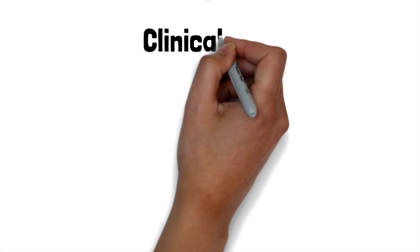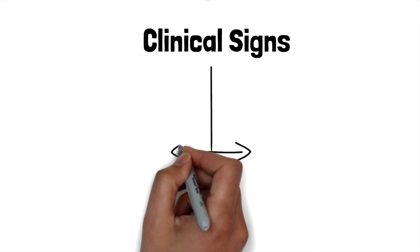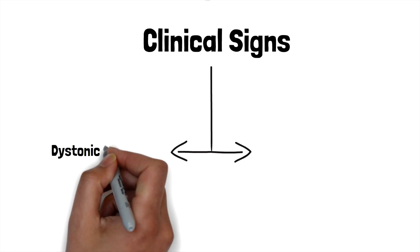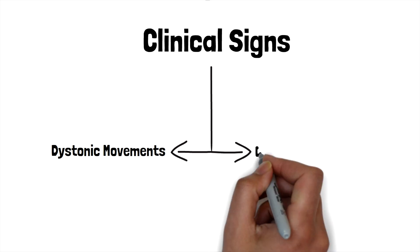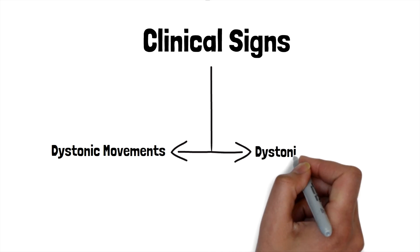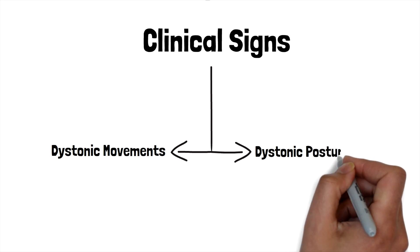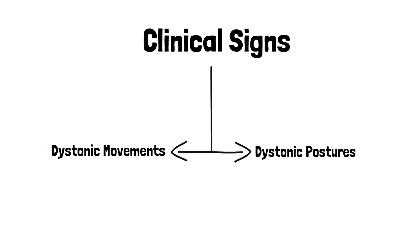Now let's take a look at the two main physical signs that are clinically present in most dystonia patients. First, we have dystonic movements. This is when the movements result in tremors, the movement is repetitive or patterned and usually sustained. The second are dystonic postures. In this, various body parts are contracted uncontrollably and there is a general deterioration in fine motor skills.